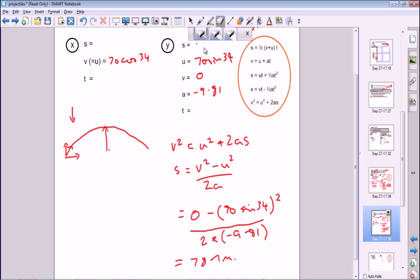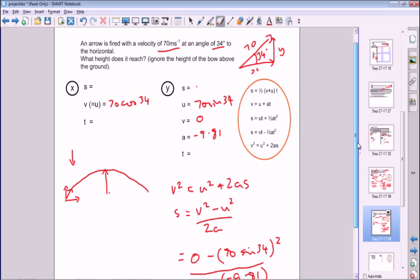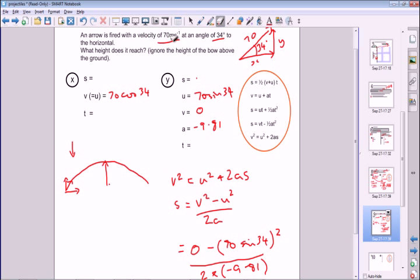That's your answer for that particular part of the question. This will probably be part of a larger question, but the reason I'm doing this bit is to show you what you do when things are projected at an angle. 70 sin 34 would be the y component of the initial velocity. That's how you do projectiles. Thanks very much.